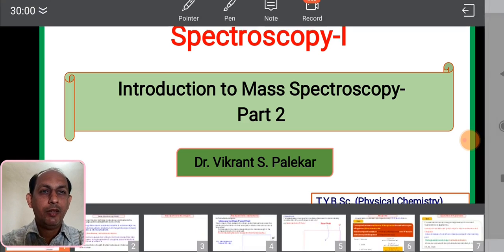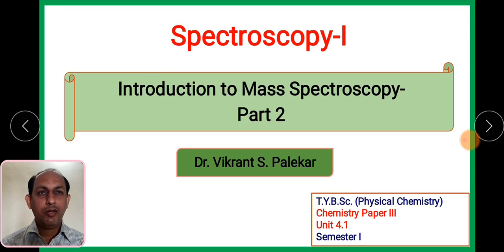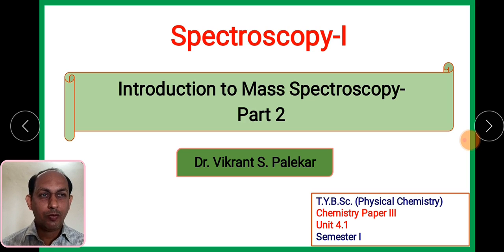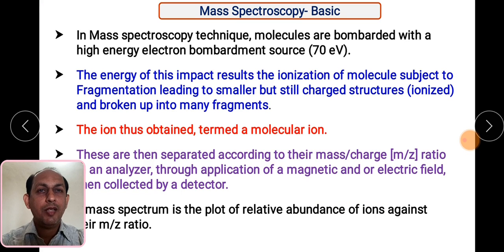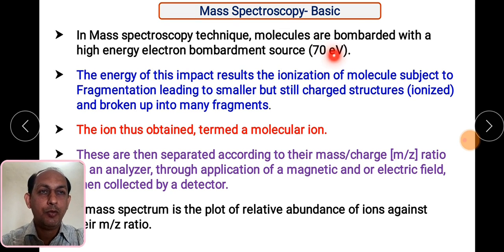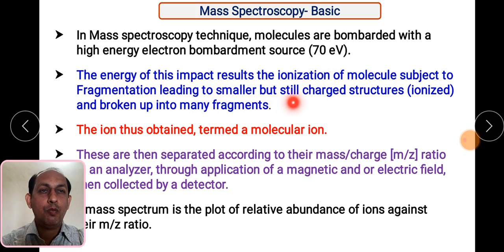Welcome to the series on the topic spectroscopy. In this particular spectroscopy part, till now we have understood UV spectroscopy. In the last session, we have seen mass spectroscopy and in that we came to know that basically a high energy electron beam is bombarded on the sample or analyte.